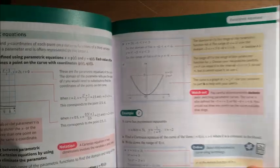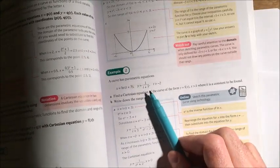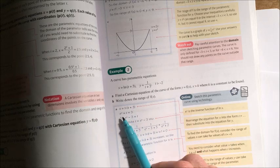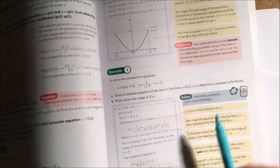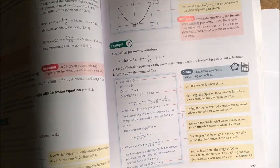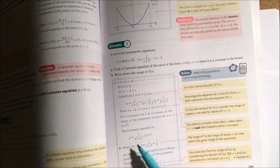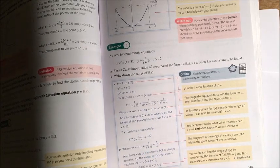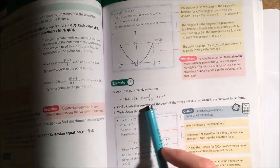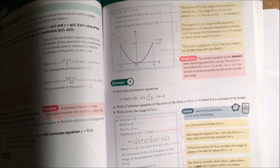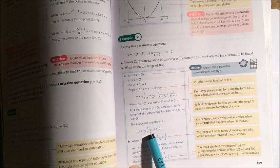And example 2 is just the same principle. Take these two equations and eliminate the T. So, in this case, they've rearranged the equation in X to get T on its own. Substitute that into Y, and the whole thing turns into this equation here. Write down the range of f of x. Well, the range of f of x isn't that easy to see in this case. But if I take the values of T and think about the Y values, then it's much easier to see from that.